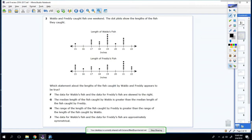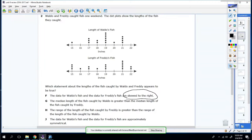Waldo and Freddy caught fish one weekend. The dot plots below show the lengths of the fish they caught. What statement about the lengths of the fish caught by Waldo and Freddy appears to be true? So first thing we're going to do is we're actually going to read through it, and we're going to determine which one's true. So the data for Waldo's fish and the data for Freddy's fish is skewed right.